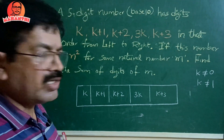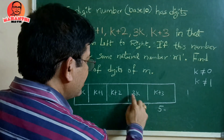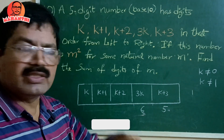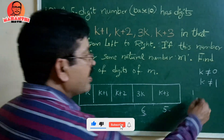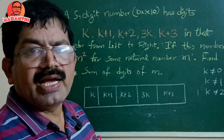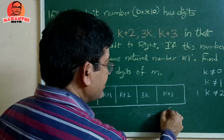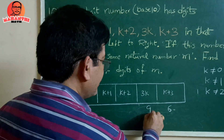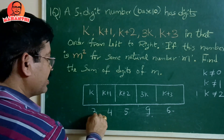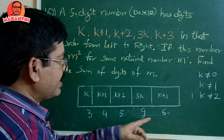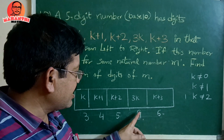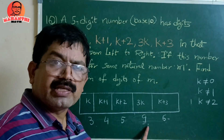Taking k=2: the units digit becomes k+3 = 5, and the tens digit becomes 3k = 6. A perfect square ending in 5 must end in 25, not 65, so k=2 is also invalid. Taking k=3: the digits become 3, 4, 5, 9, 6 — that is, the number 34596. This ends in 6, so the tens digit must be odd; here it is 9, which is odd. It appears to satisfy the perfect square property.